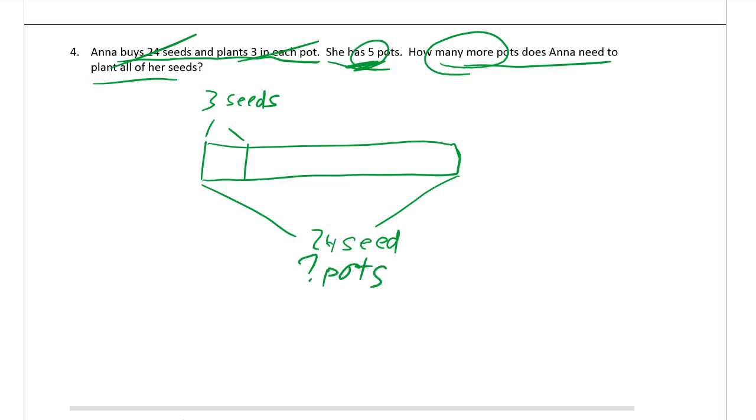You could do this with division right here to see how many pots we're going to need. We don't know how many pots. She has 5, but she's going to need more. We need to figure out how many more. We could do 24 divided by 3, which equals 8. Or if you don't want to use the division equations like that, you could just draw and count. It still works. You could draw the seeds. 3 seeds there. 3, 6, 9, 12, 15, 18, 21, 24.